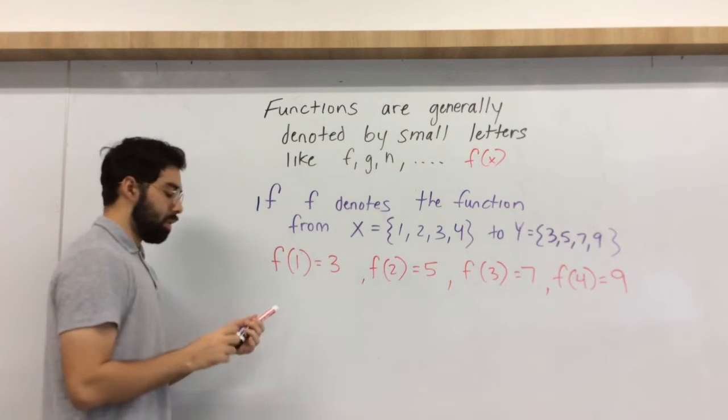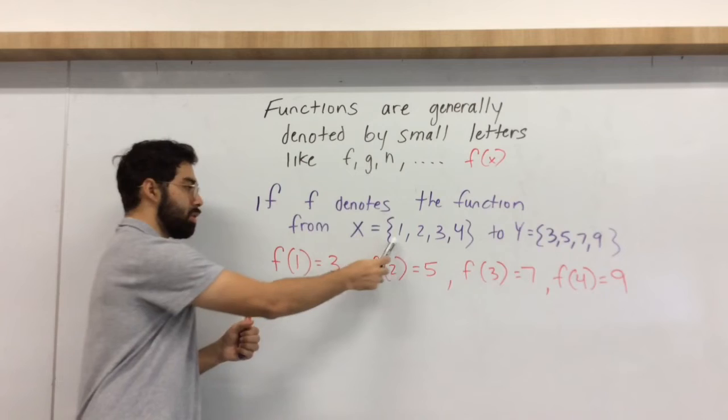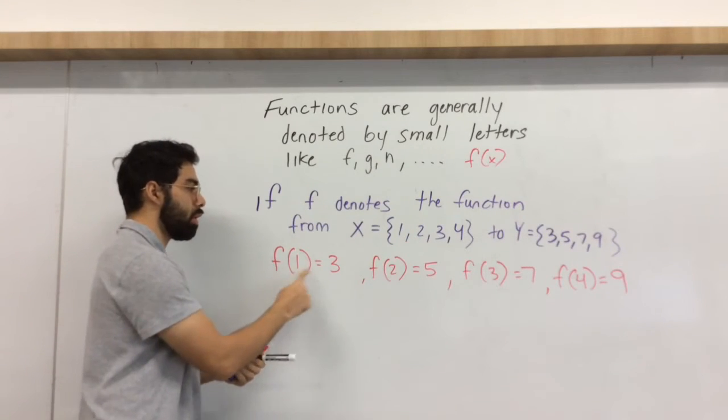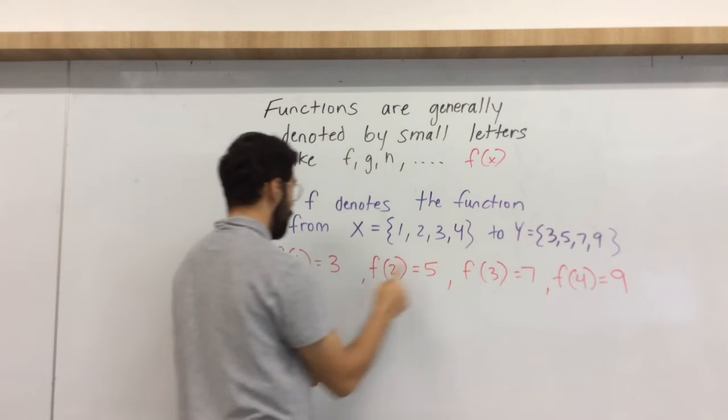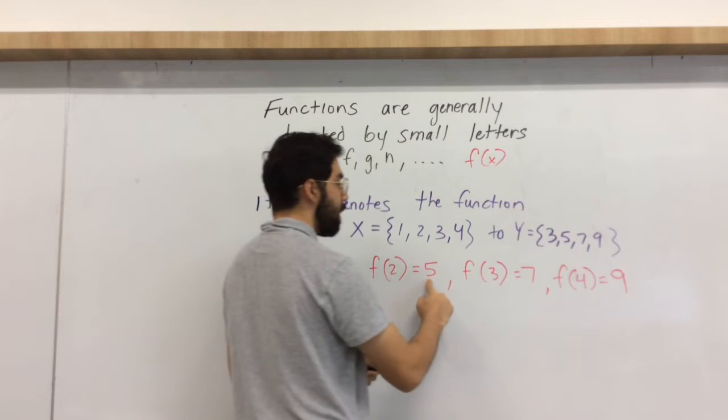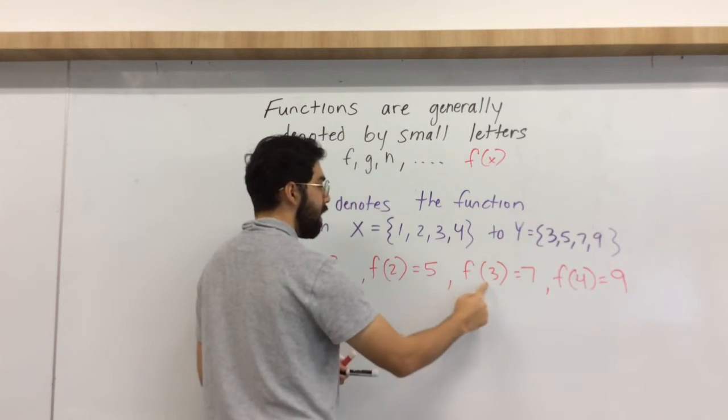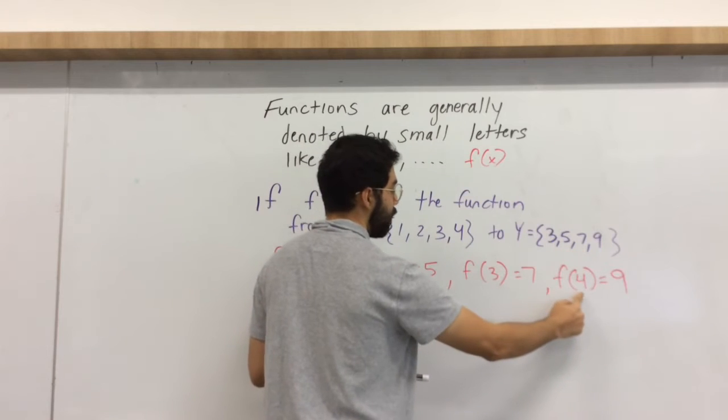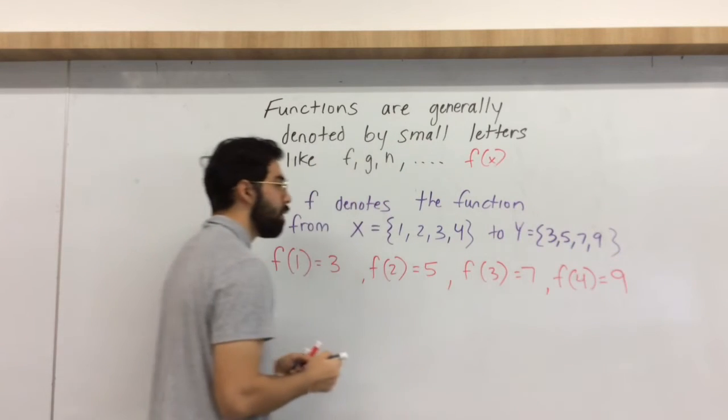And again, it's 1, 2, 3, 4 in respect to 3, 5, 7, 9. So 1 has an output of 3, the function of 2 has an output of 5, f of 3 has an output of 7, and f of 4 has an output of 9.